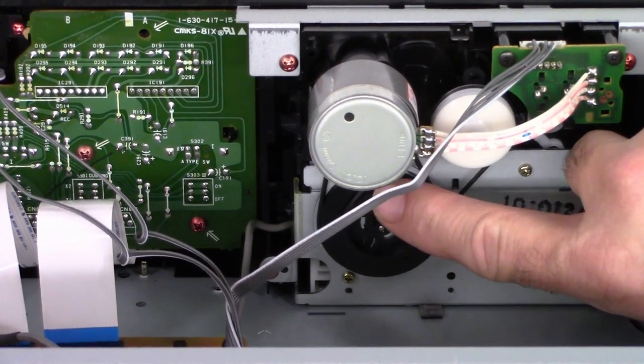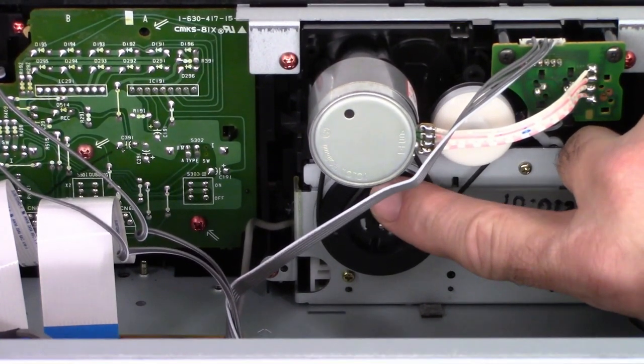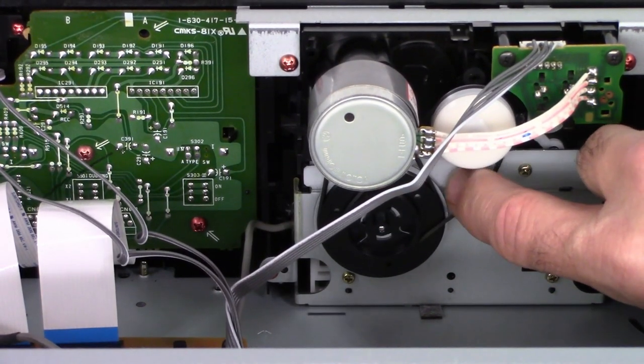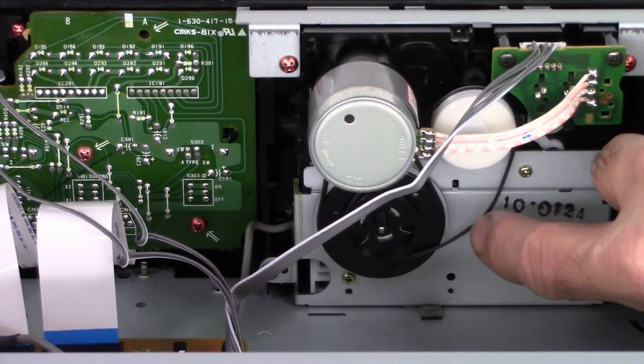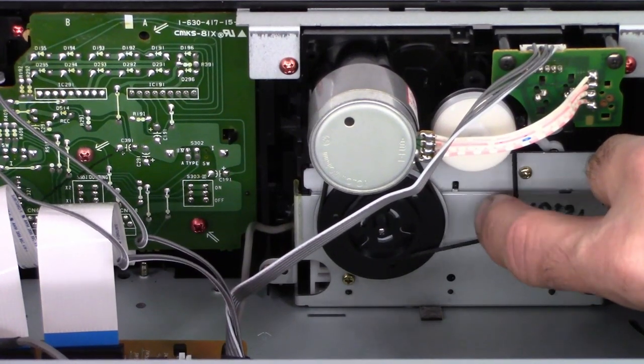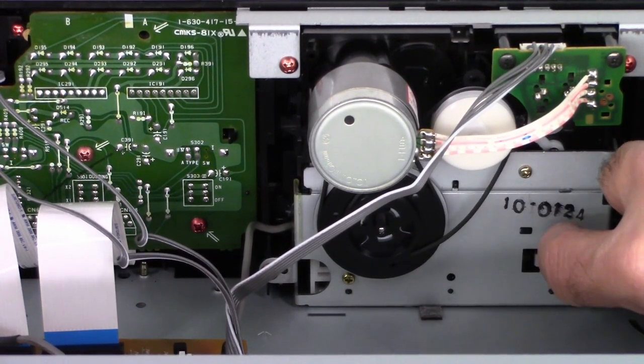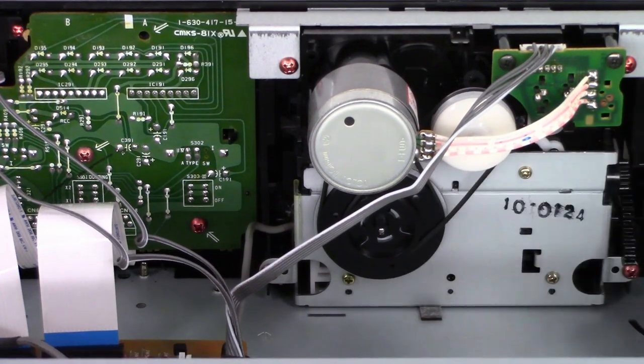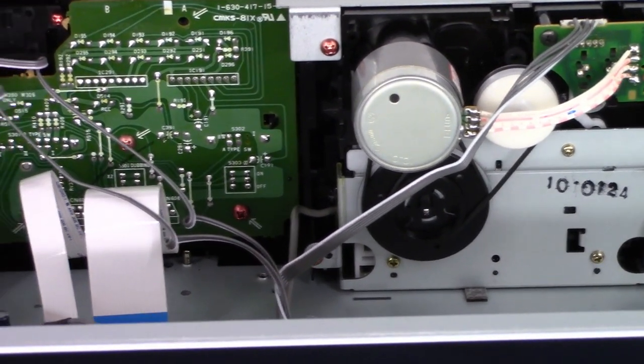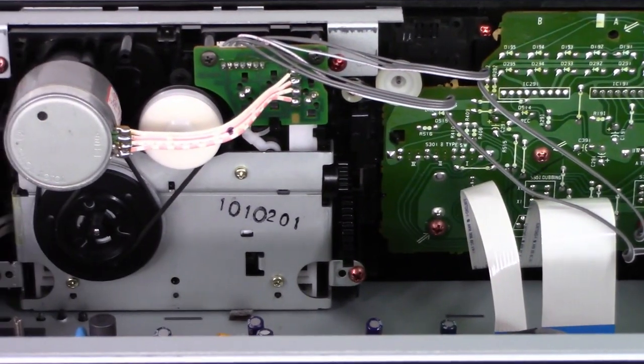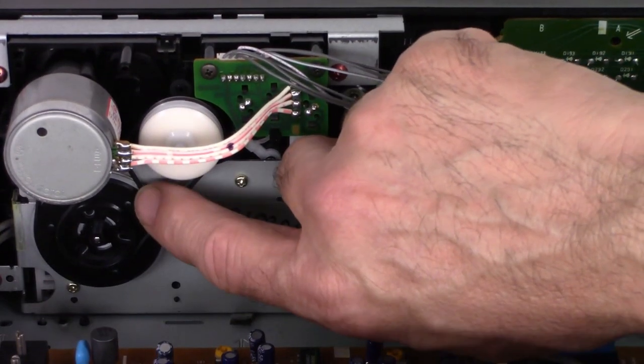So first thing I'm going to do is just estimate to the customer to replace a set of belts. Oh, that one's really bad. Look at that slow response. It should snap back like a rubber band, but nope. So it's going to need a set of belts. Not too major on a deck like this. They're pretty easy to access. The mechanism comes out quite easily.